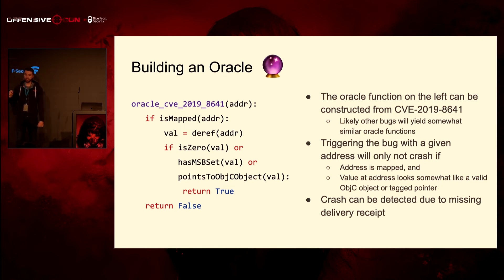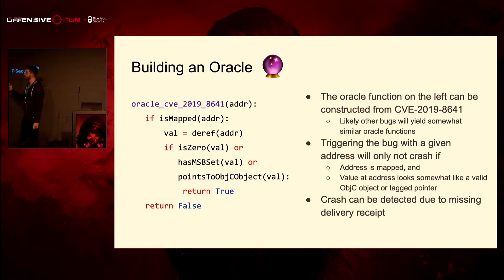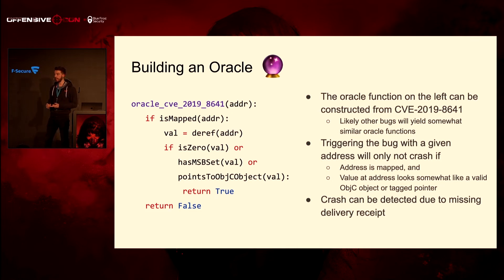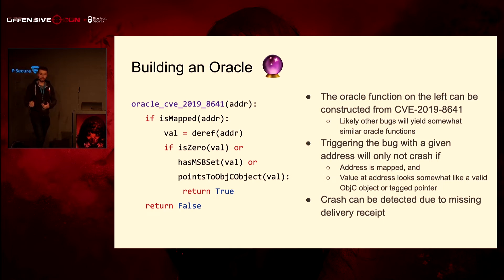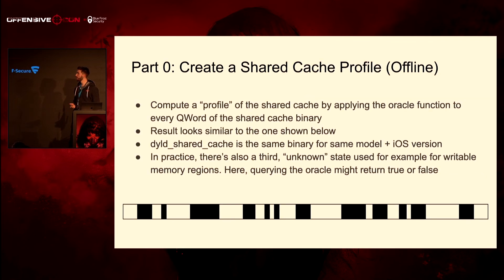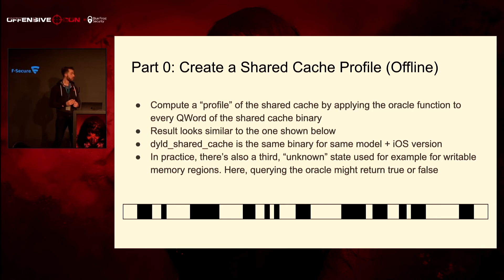Let's build an oracle. The bug gives us an arbitrary address dereference primitive, which gives us this oracle function: we put in some address, and it will only not crash if the address is mapped and the value at that address is either zero, looks like a valid Objective-C pointer (most significant bit set means a tagged pointer), or actually points to a valid Objective-C thing. We can observe the crash via delivery receipt or lack thereof. Part zero is offline — we compile a profile of the shared cache given this oracle function. You take the DYLD shared cache from IPSW, run the oracle function over the entire shared cache, and the result is basically a bitmap.